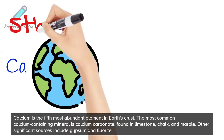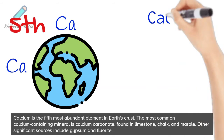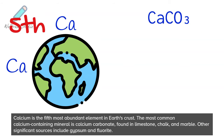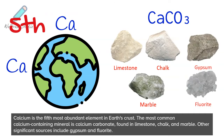Calcium is the fifth most abundant element in Earth's crust. The most common calcium-containing mineral is calcium carbonate, found in limestone, chalk, and marble. Other significant sources include gypsum and fluorite.